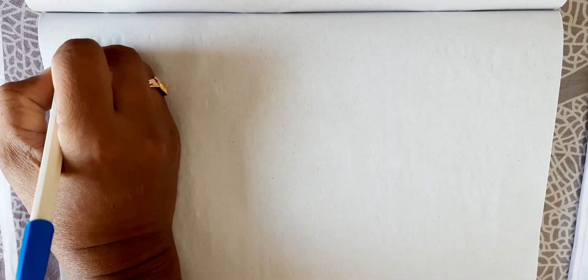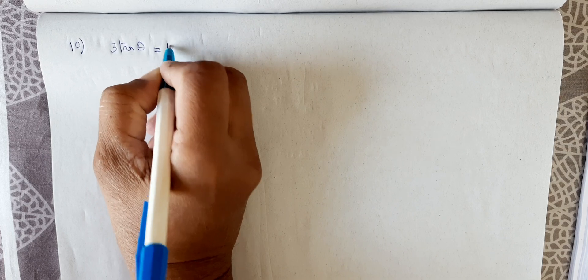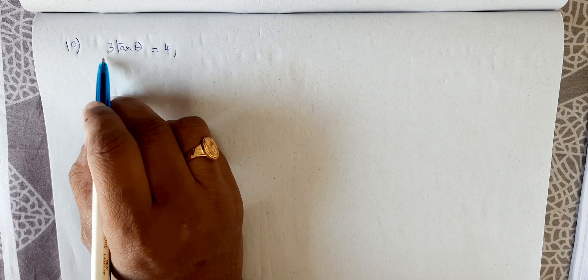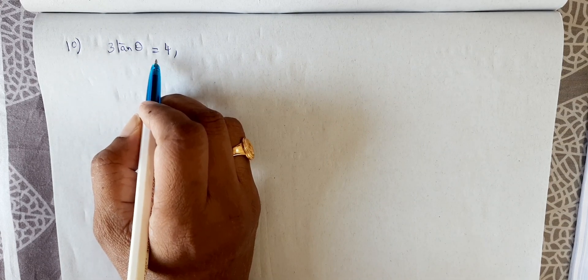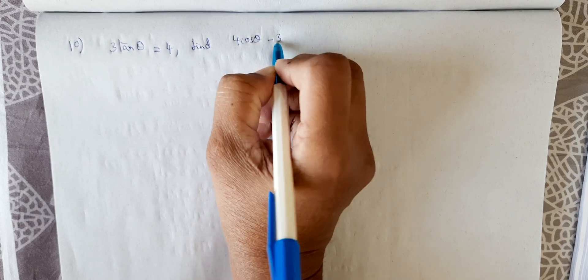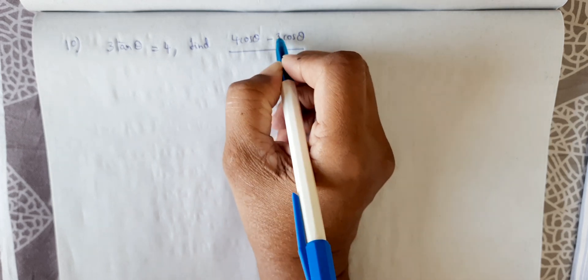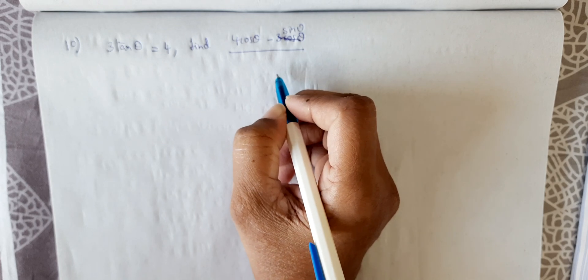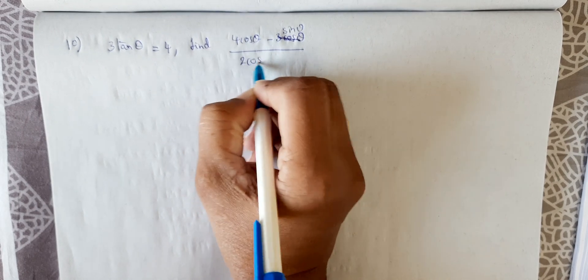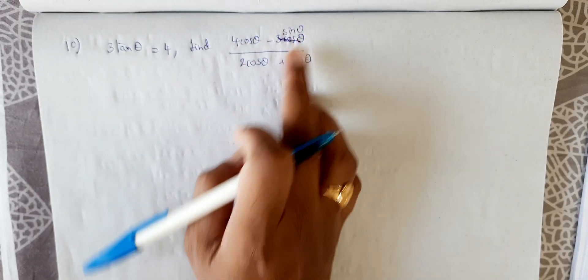Today we'll solve problem 10 from exercise 10.1 of RD Sharma new edition. The 11th problem is similar, so once you understand the 10th one you can easily do the 11th. The problem given is: 3 tan θ = 4, and we need to find the value of (4 cos θ - sin θ) / (2 cos θ + sin θ).